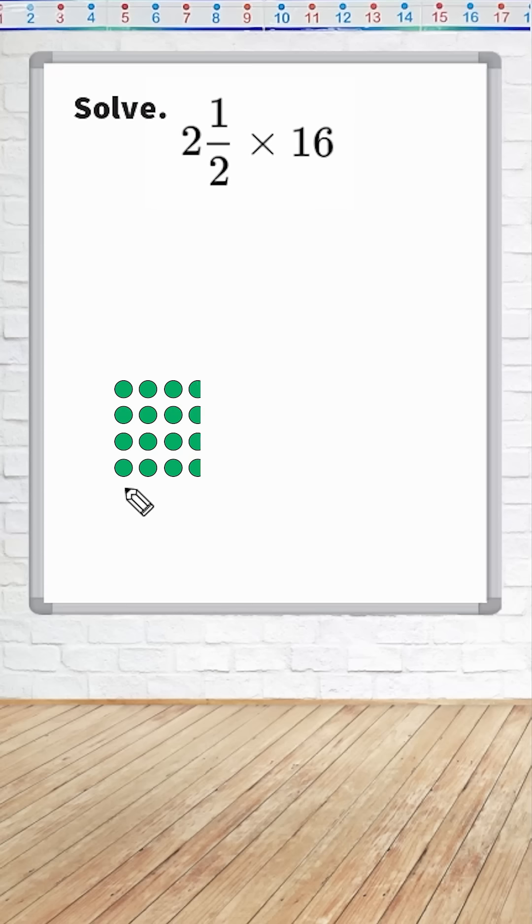So right here we have one group of 16, a second group of 16, and we don't have a third group of 16, but we have half a group of 16, which is 8.